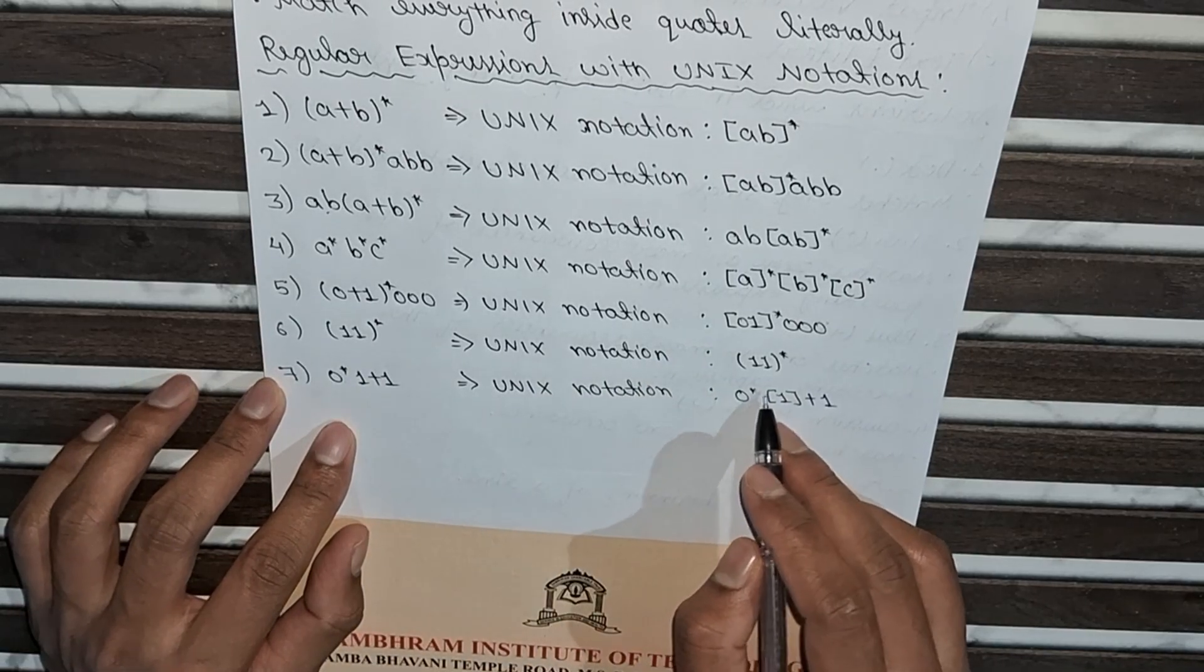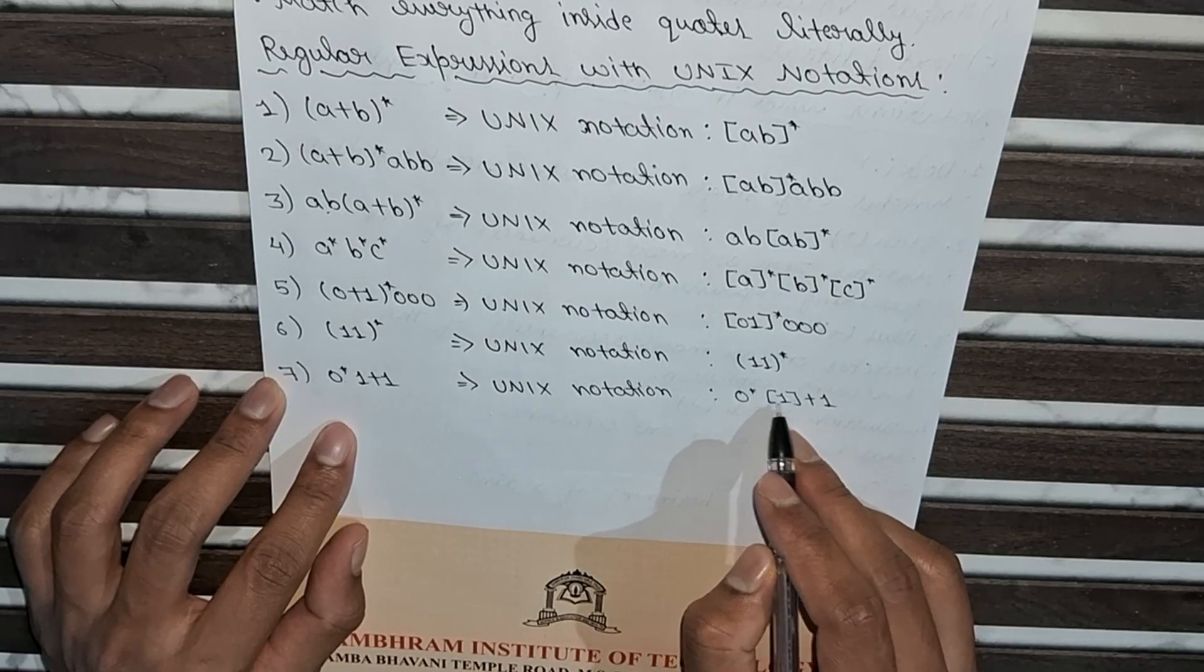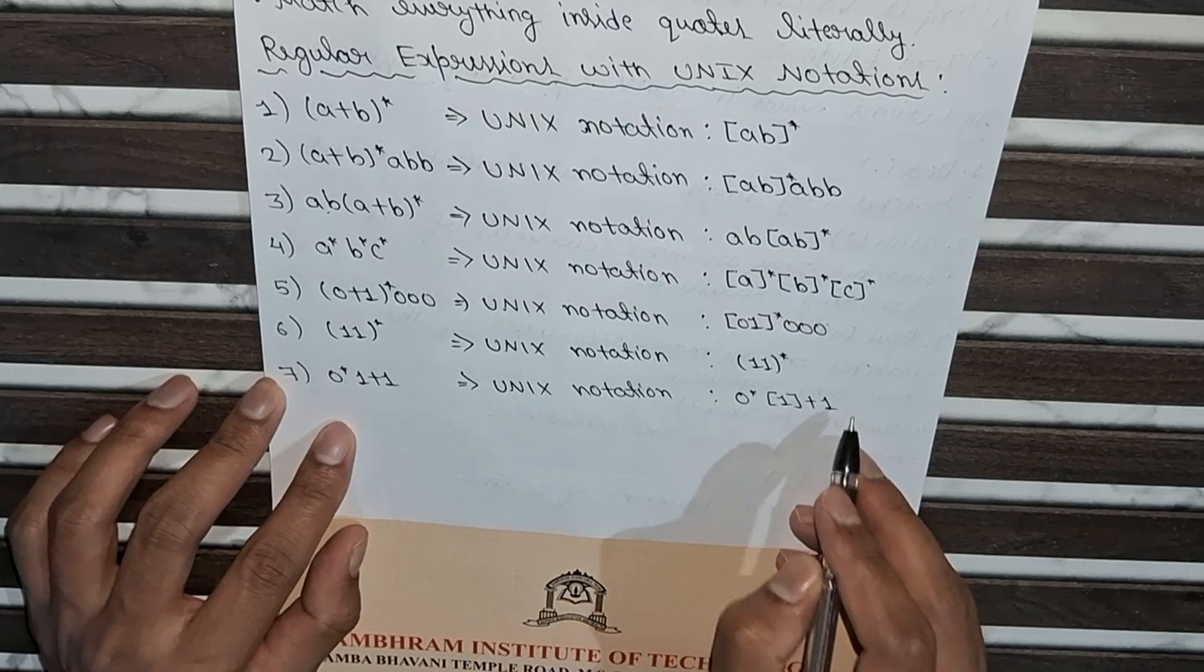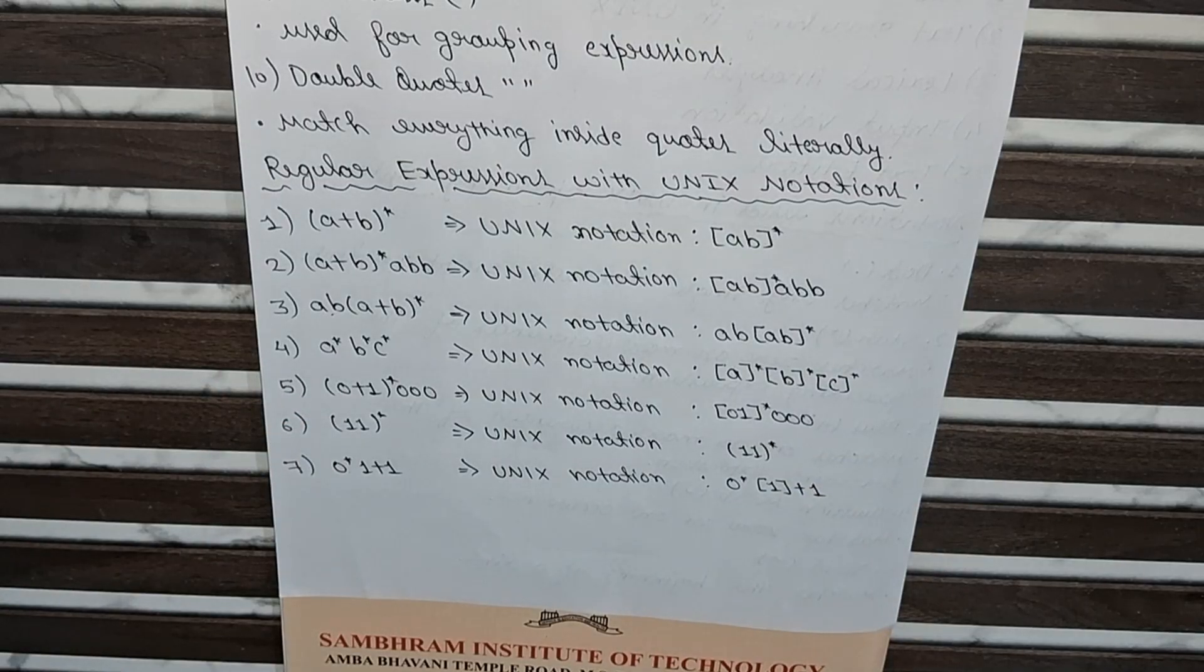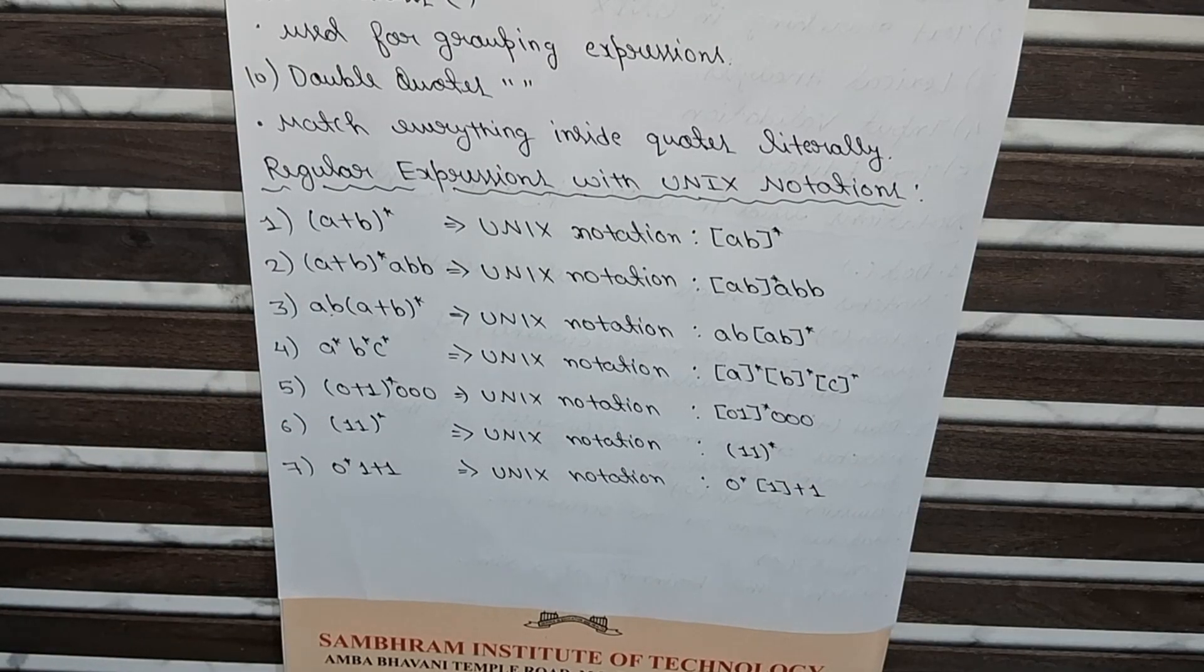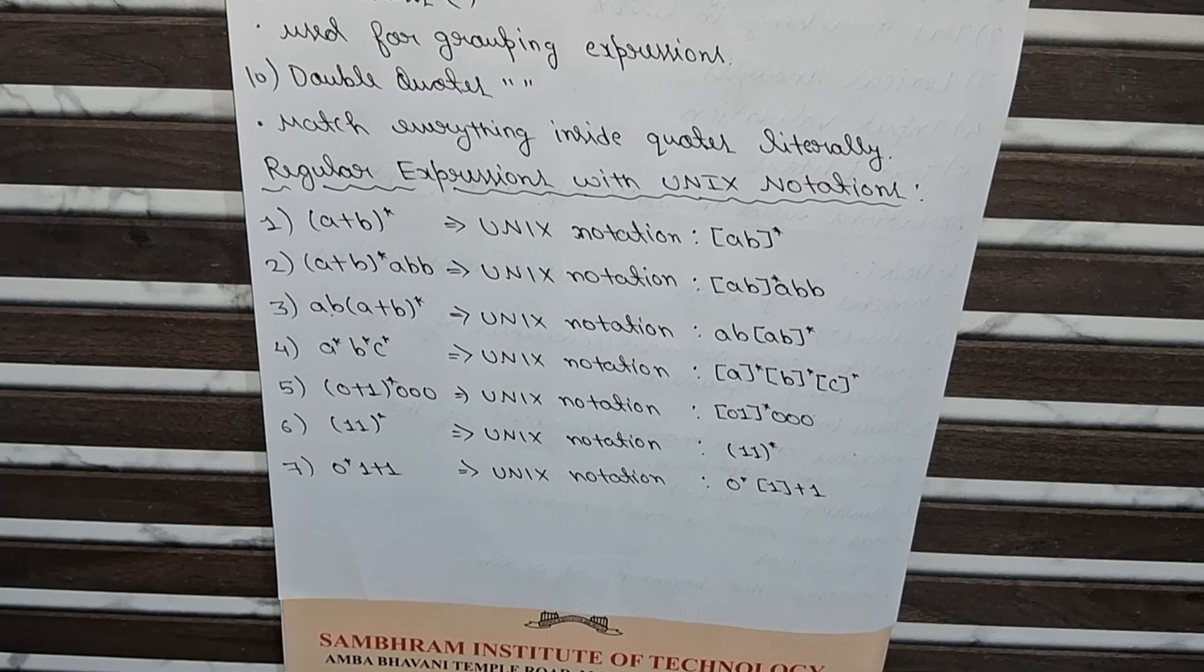And in seventh one, 0*(1+1), in Unix notation we will represent it as 0* under square brackets we will write one plus one. So like this we have to represent all the Unix notations and the applications of Unix operating system.